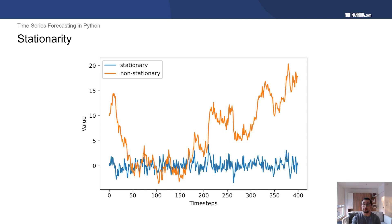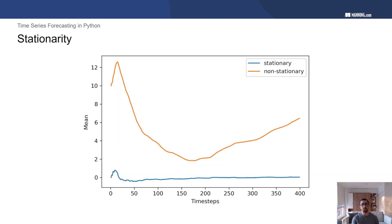Let's take a look at the statistical properties of these two processes. Looking at the mean of the time series over time: in blue, for the stationary process, once you give it a few time steps for the mean to stabilize, the mean stays fairly constant over time. However, for the orange process, the mean changes drastically over time. So for a stationary process, the mean stays constant, but for a non-stationary process, the mean is really a function of time.